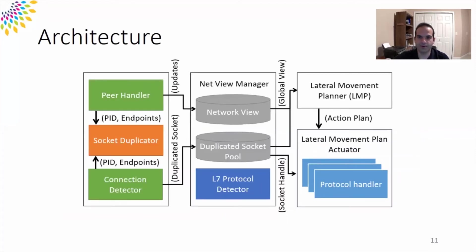Now let's go deeper and see how ShadowMove works internally. It is composed of six different modules. The Peer Handler is responsible for exchanging network view with other ShadowMove instances. The Connection Detector module detects newly established connections. Both rely on the Socket Duplicator to duplicate sockets. The Network View Manager updates the network view and socket pool based on information received from the Peer Handler and Connection Detector. Periodically, the Lateral Movement Planner is launched based on the existing socket pool and current network status, and it comes up with the most appropriate action plan, then invokes the Lateral Movement Plan Actuator to implement the plan.